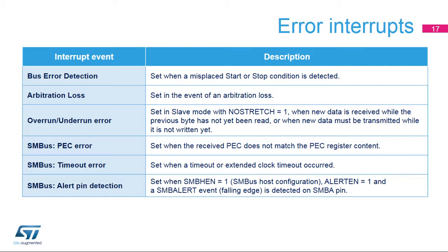Several error flags can be generated. A bus error detection flag is set when a misplaced start or stop condition is detected. The arbitration loss flag is set in the event of an arbitration loss. An overrun or underrun error flag is set in slave mode with clock stretching disabled when an overrun or underrun error is detected. In SMBus mode, a PEC error flag is set when the received PEC does not match the calculated PEC register content. A timeout error flag is set when a timeout or extended clock timeout is detected. An alert pin detection flag is set in the SMBus host configuration when alert is enabled and a falling edge is detected on the SMBA pin.